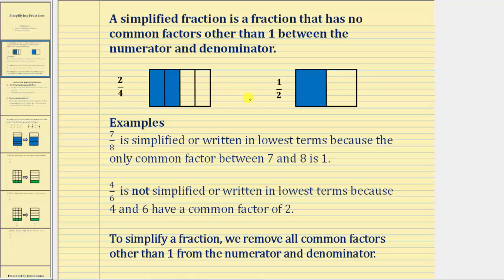For some additional examples, seven-eighths is a simplified fraction, or a fraction written in lowest terms, because the only common factor between seven and eight is one. And the fraction four-sixths is not simplified or written in lowest terms because four and six have a common factor of two.